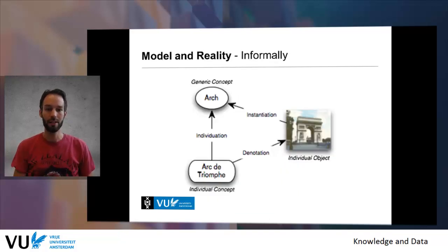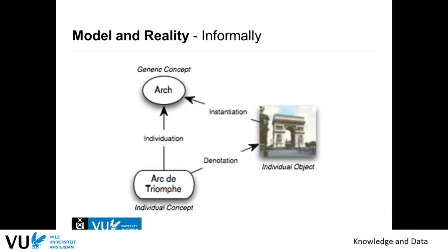Recall we had the schema and data level. At the schema level we have generic concepts, and at the data level we have our actual instances. In this case, the Arc de Triomphe is classified as an Arc — it is an individual concept with an actual place, location, and a specific name. We can classify it as an arch because structurally it is one, but it is also a building, so we can classify it as multiple things. Using RDF schema we can do this classification.